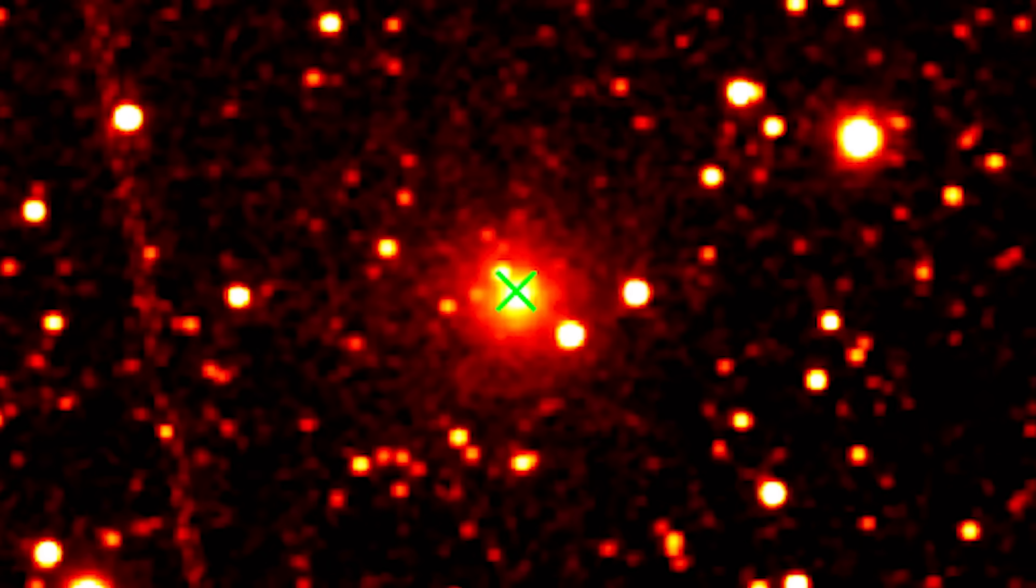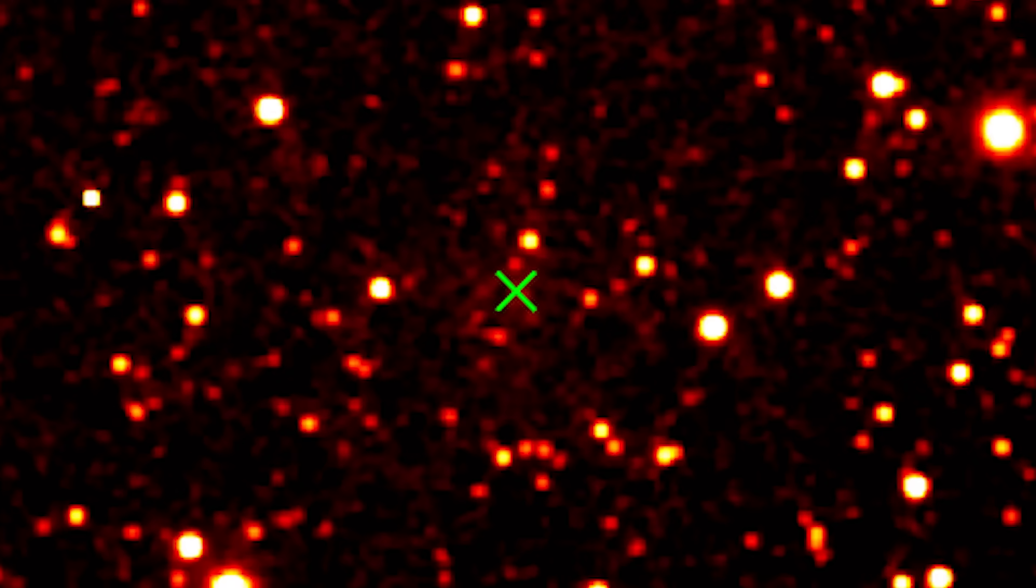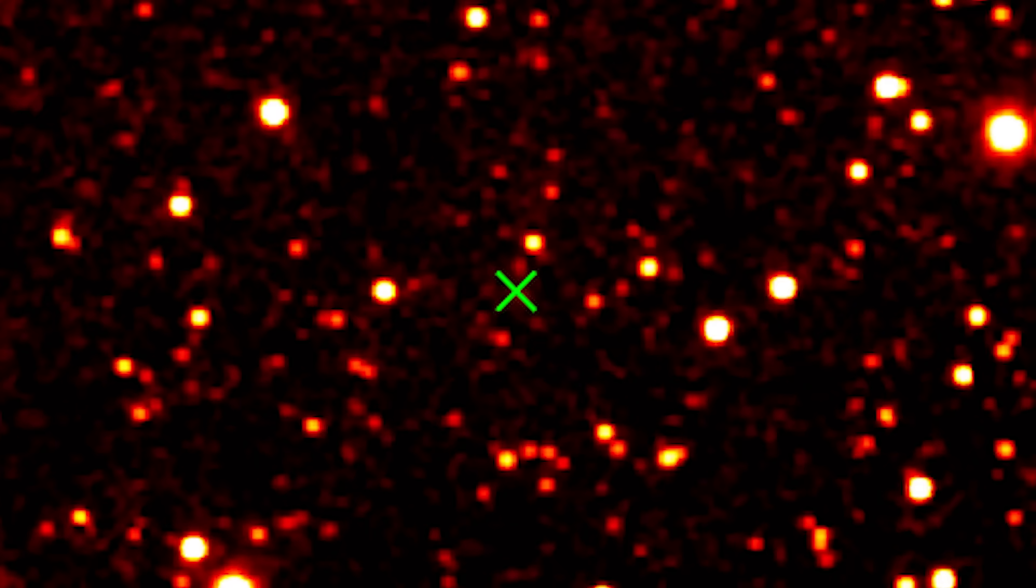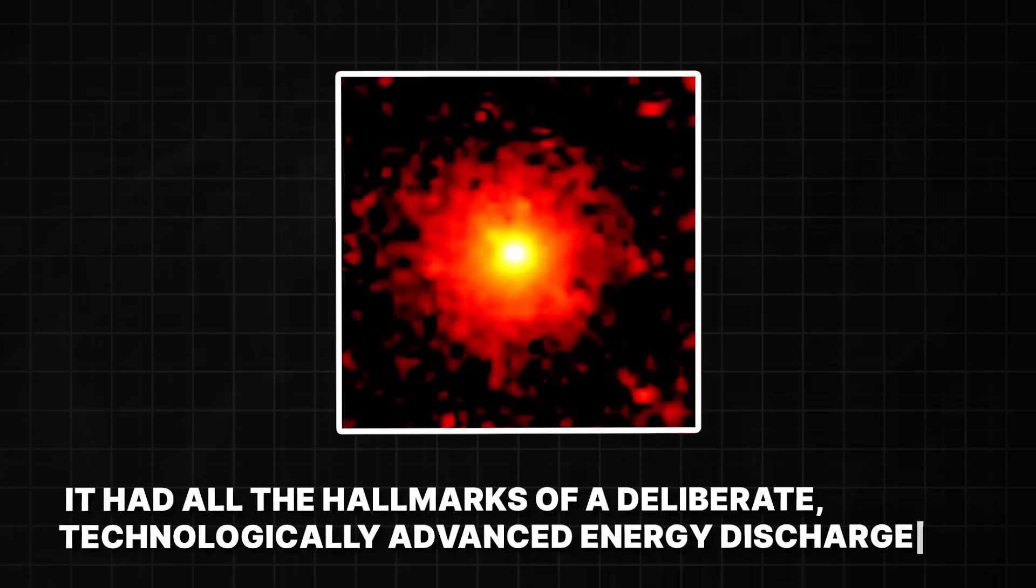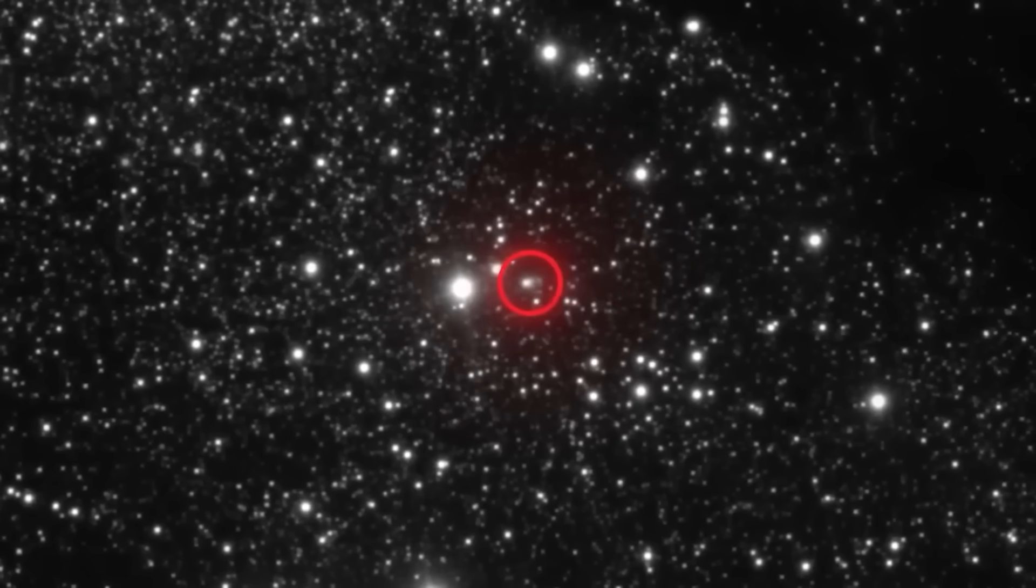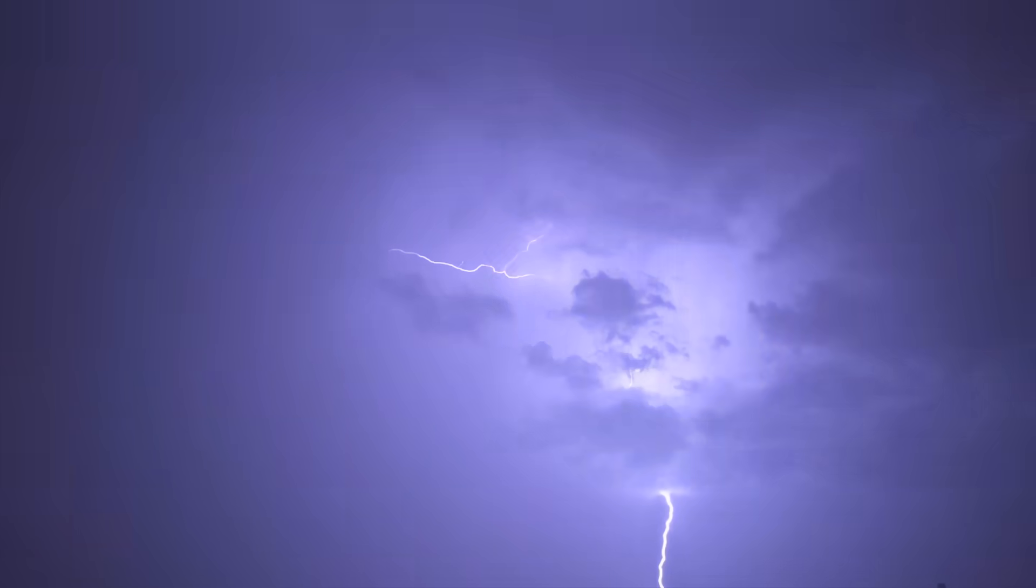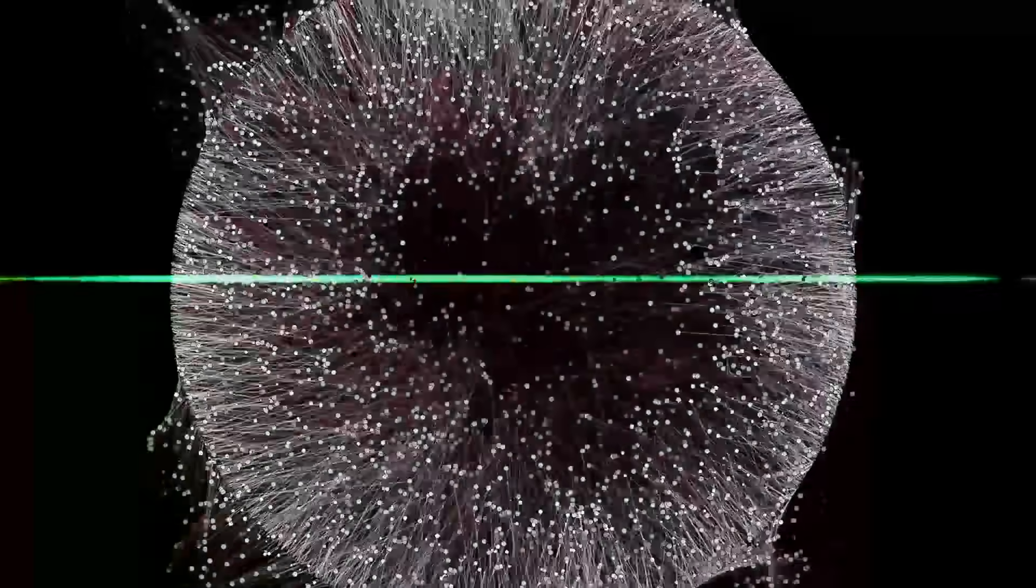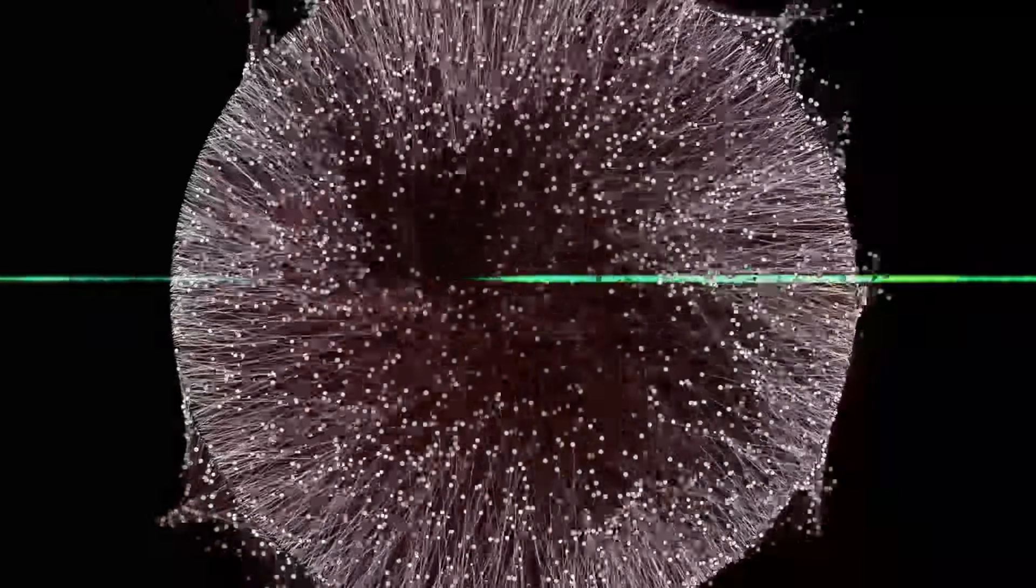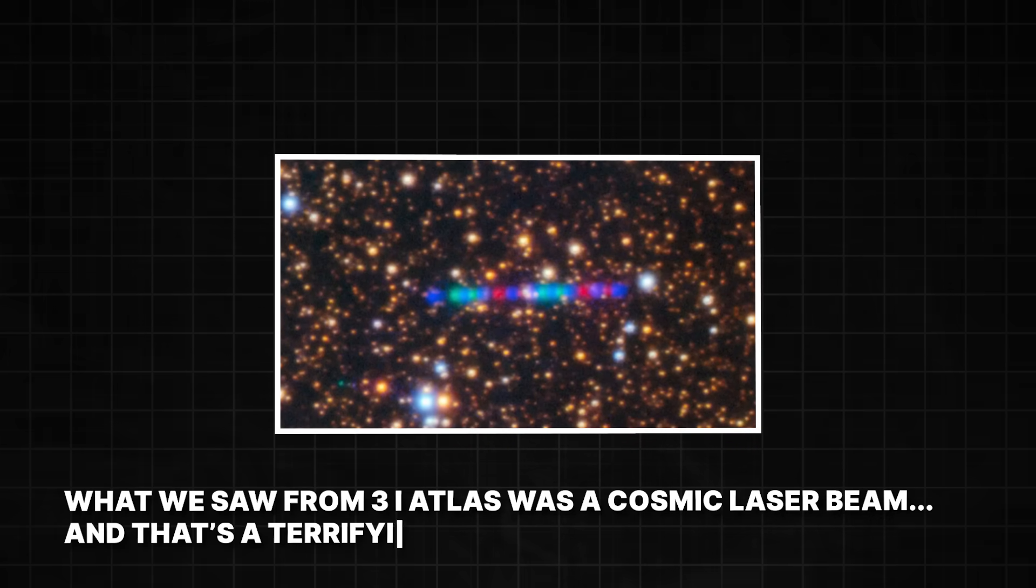The energy signature of the pulse was unlike anything we've ever seen from a natural source. It was clean, focused, and incredibly efficient. It had all the hallmarks of a deliberate, technologically advanced energy discharge. We're talking about a level of precision that nature simply doesn't possess. Think of it like this. A lightning strike is powerful, but it's chaotic and unpredictable. A laser beam, on the other hand, is focused and controlled. What we saw from Three Eye Atlas was a cosmic laser beam. And that's a terrifying thought.